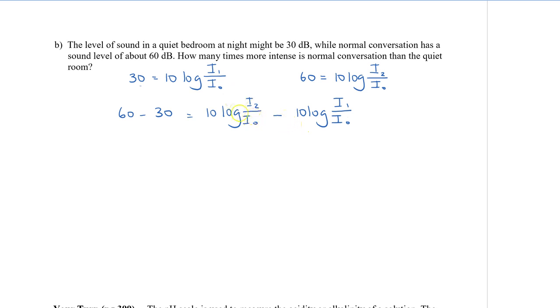So 60 minus 30 is the same thing as 10 log i₂ over i₀ minus 10 log i₁ over i₀. Okay, so when we subtract, that means that we are actually dividing the values that we log. So on my left, I get 30 equal to 10, which I am going to factor out. So I have log i₂ divided by i₀ minus log i₁ divided by i₀. So we have 3 equals log, and this is going to be i₂ over i₀ divided by i₁ over i₀. So we have 3 equals log, and this is going to be i₂ over i₀ times i₀ divided by i₁.